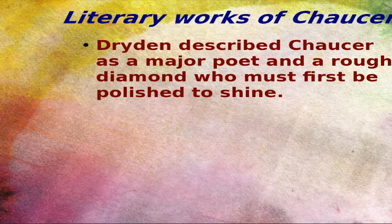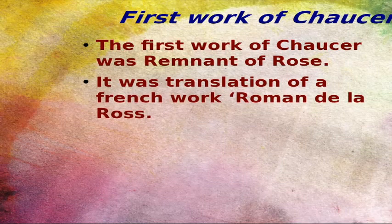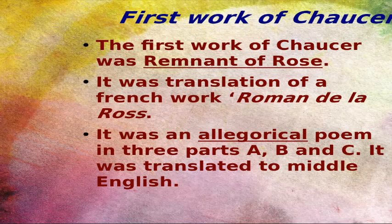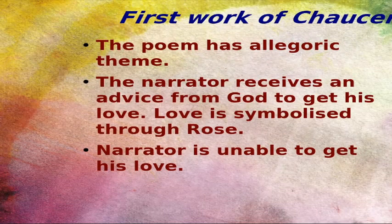The first important work we are going to discuss is the Romaunt of the Rose. It was a translation of a French work, Roman de la Rose, and is an allegorical poem. The text is found in three different fragments: A, B, and C. It was translated into Middle English. There is an allegorical theme in which the narrator receives advice from God to get his love. Love is symbolized through the Rose, but the narrator is unable to get his love in this poem.